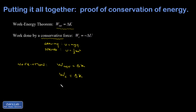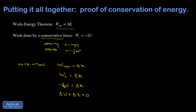I can write the work done by a conservative force as the negative of the change in the potential energy function. Adding that term to both sides and rearranging gives delta U plus delta K equals zero. This says the change in potential energy plus the change in kinetic energy is zero — in other words, there is no change in the total energy.